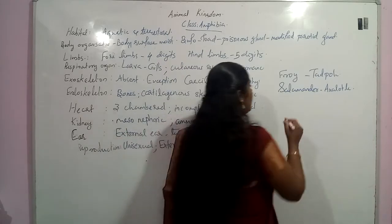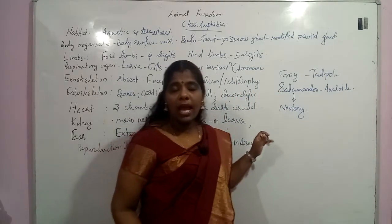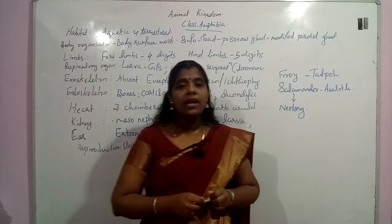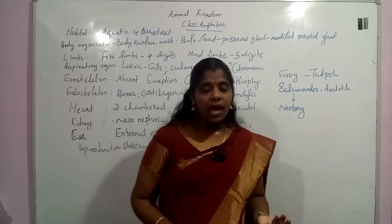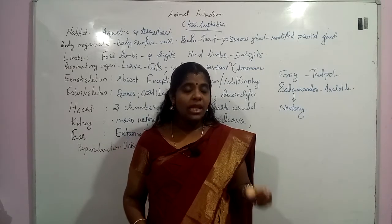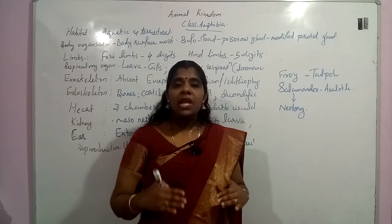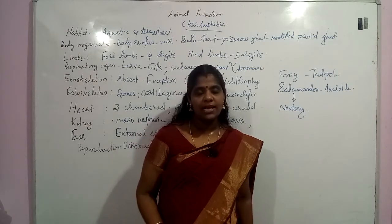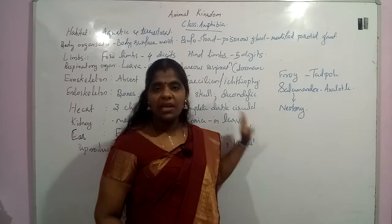Salamander shows neoteny. Neoteny means an organism which is able to mature and show reproduction capacity in the larval stage itself. In salamander, if iodine is not available, the thyroid cannot develop, so it remains as the axolotl larva. The axolotl larva gets reproductive capacity and undergoes reproduction in that larval stage. Neoteny is a characteristic feature of salamander — an extra important point.